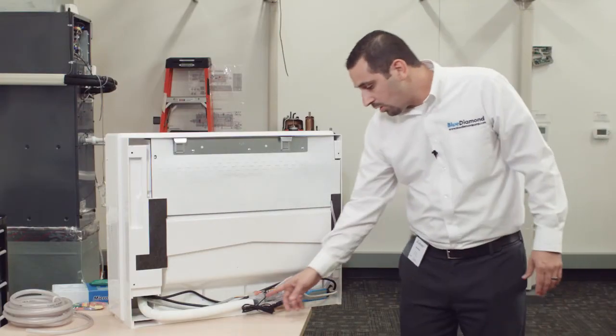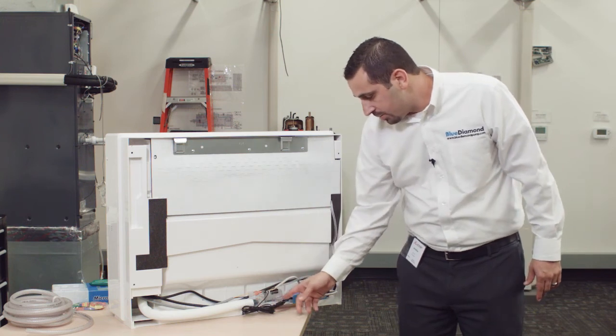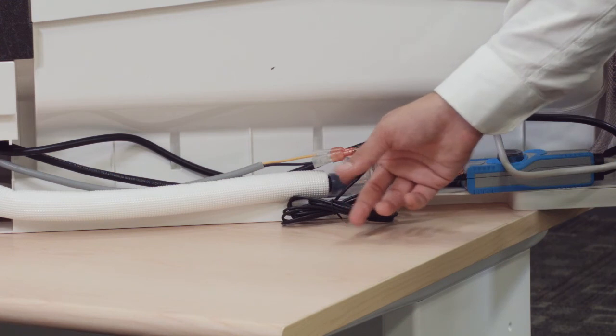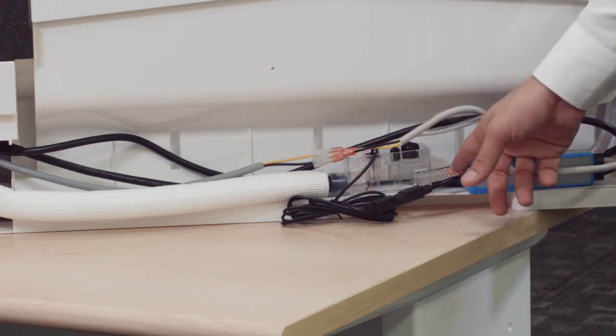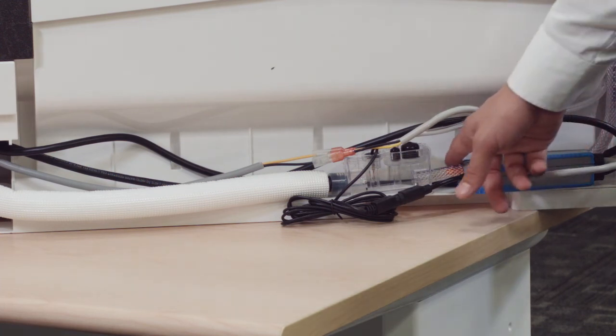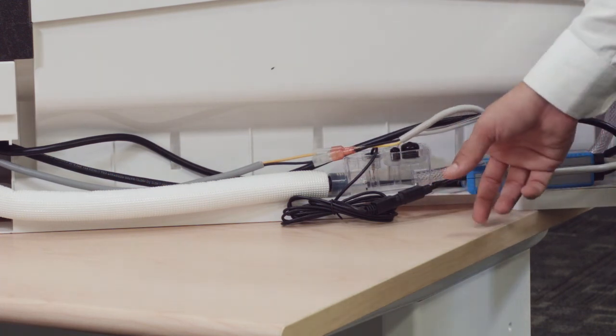Also want to make sure that we have all of our connections air and water tight. We want to make sure that we have it clamped here, we also want to make sure that it is clamped here on the suction side. Because we're creating vacuum, we want to make sure that especially this connection is air and water tight.